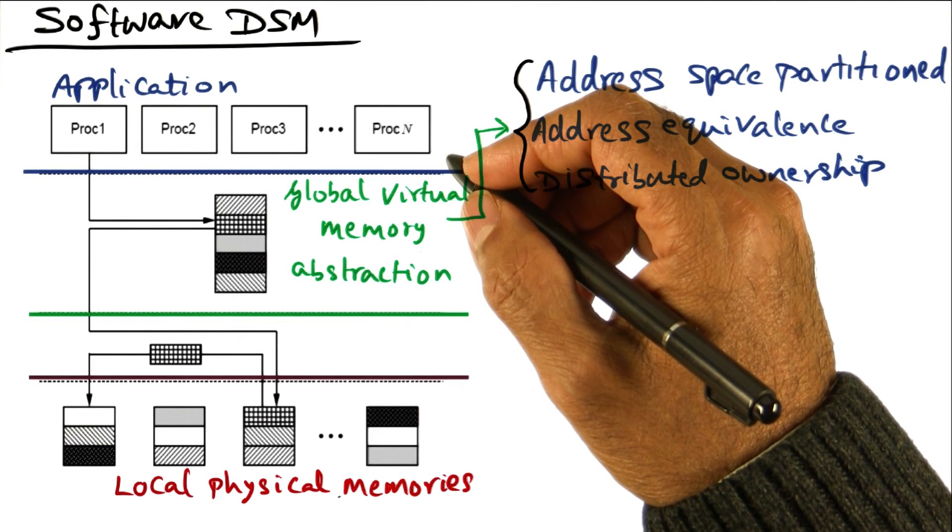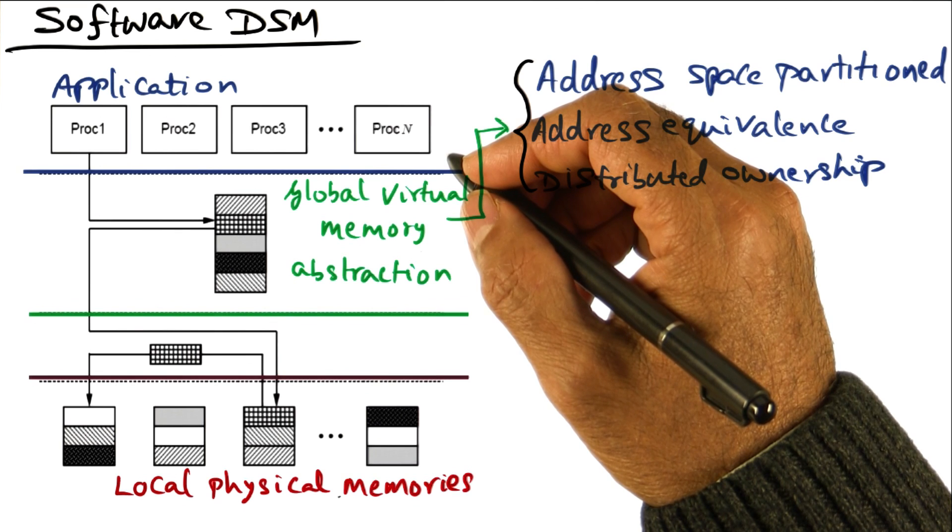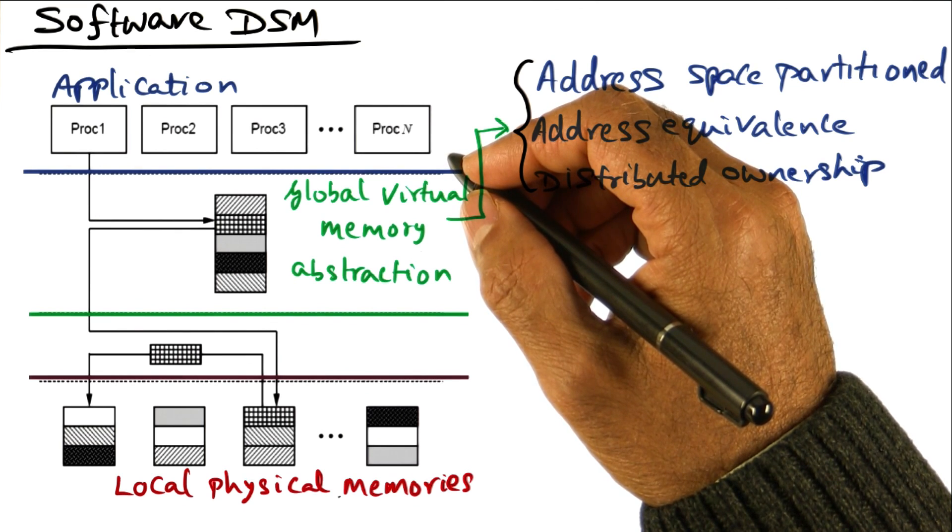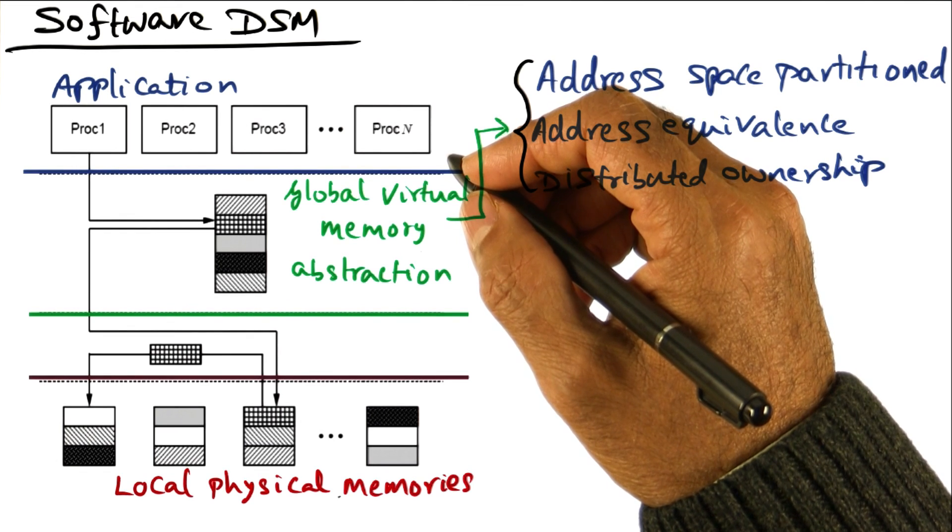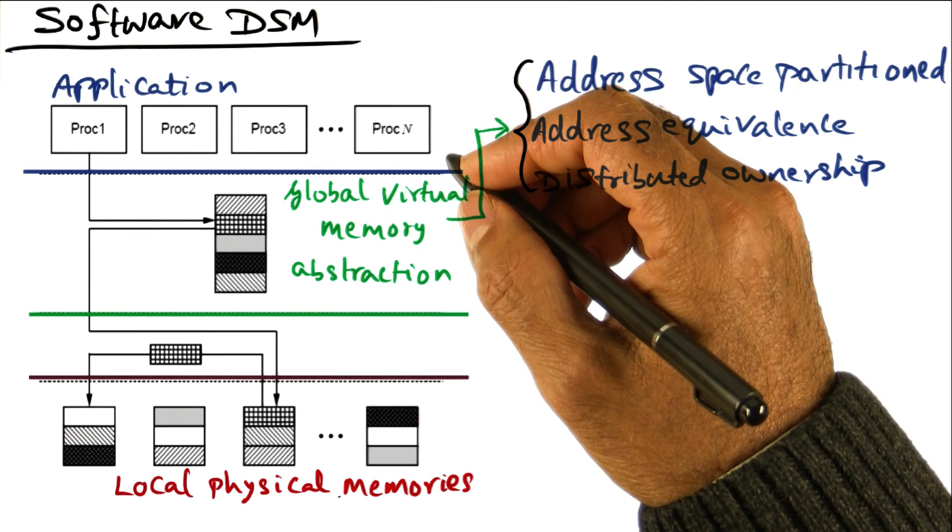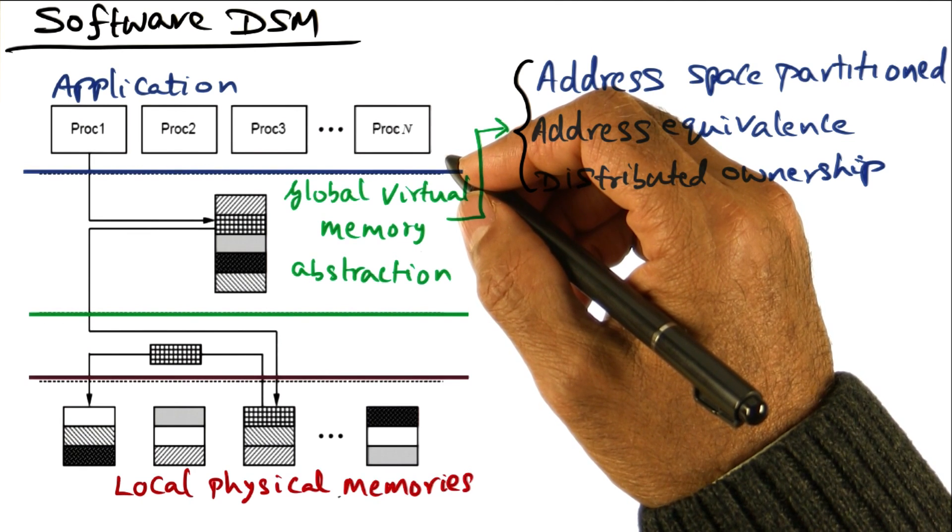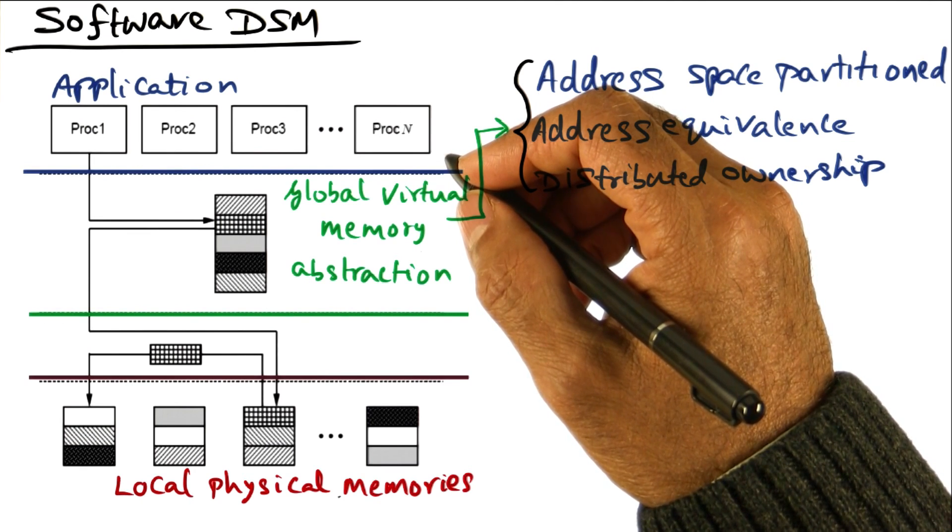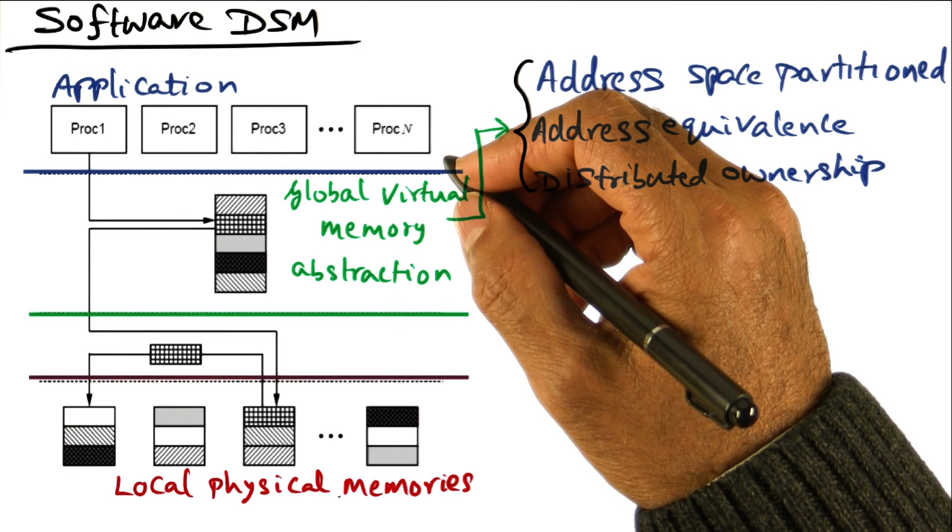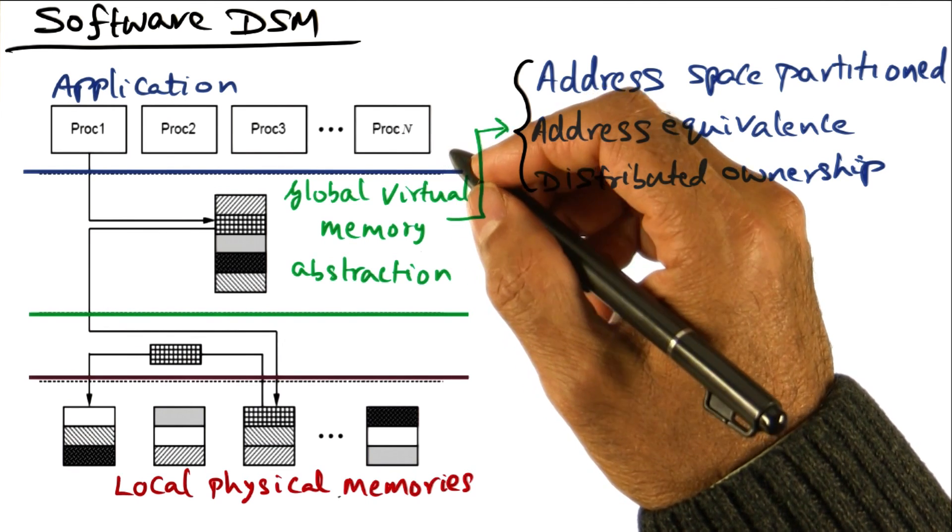So far, we've seen three different memory consistency models. One is a sequential consistent memory model, the lease consistent memory model. And strictly speaking, I would say the eager version and the lazy version are just variants of the same memory model, namely the lease consistent memory model. And now, we're going to transition and talk about software distributed shared memory and how these memory models come into play in building software distributed shared memory.